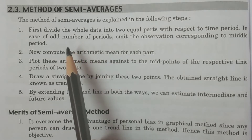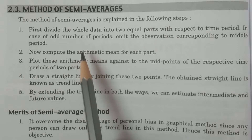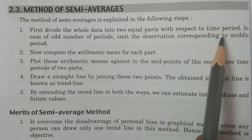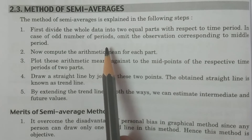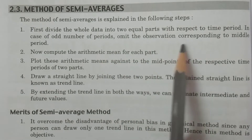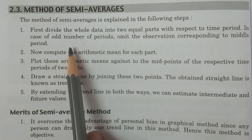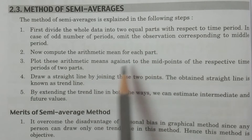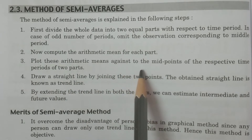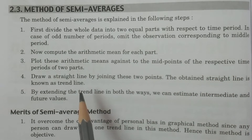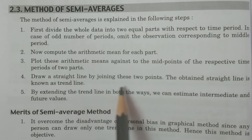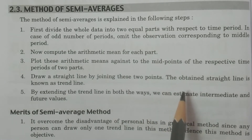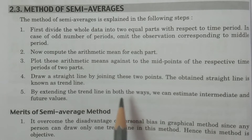Here it is explained in some steps. First of all, we have to divide the whole data into two equal parts with respect to a particular time period. In case of an odd number of years or odd number of periods, omit the observation corresponding to the middle period. After that, you have to compute the arithmetic mean of each part, and plot these arithmetic means against the midpoint of the respective time periods. Then draw a straight line by joining these two particular points, which will give you a trend line.